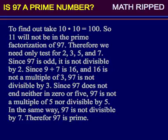Since 97 does not end either in 0 or 5, 97 is not a multiple of 5 nor divisible by 5.